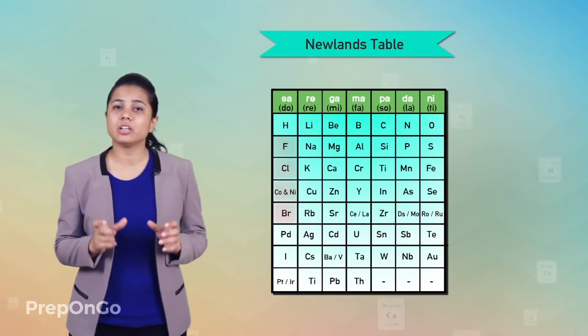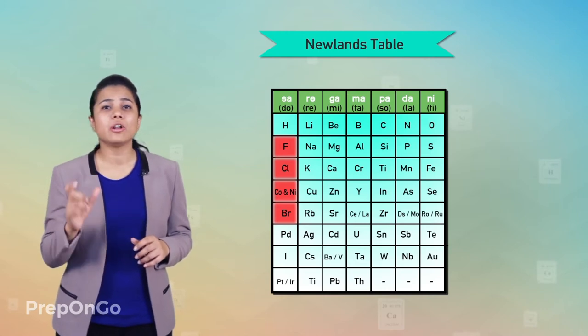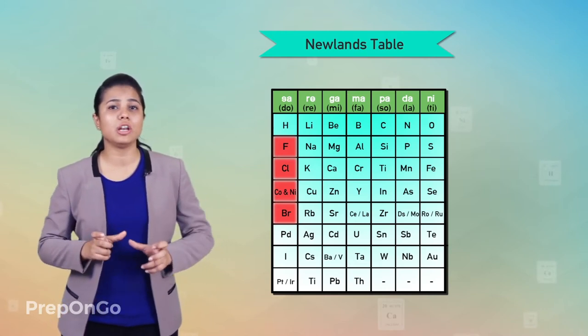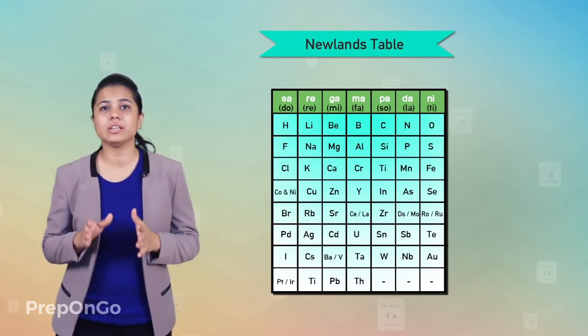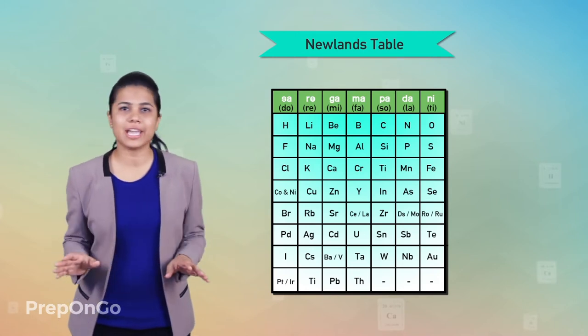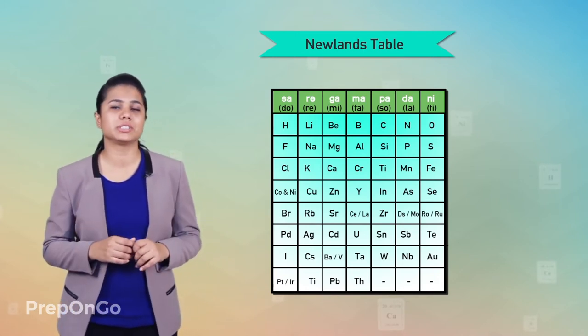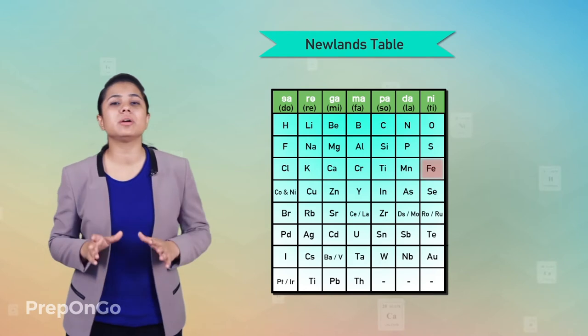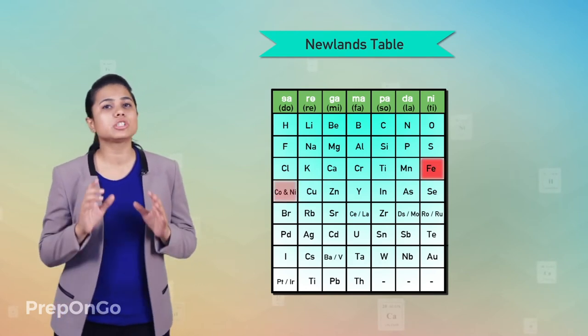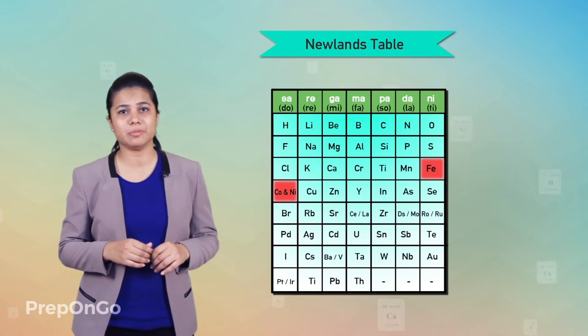Like, cobalt and nickel were placed in the same slot and also put under the same column as fluorine, chlorine, and bromine, which have entirely different properties than these elements. Iron, which has similar properties to nickel and cobalt, was placed very far away from these elements.